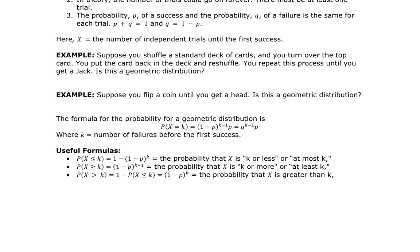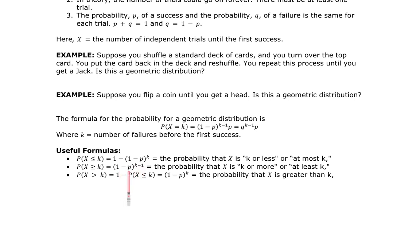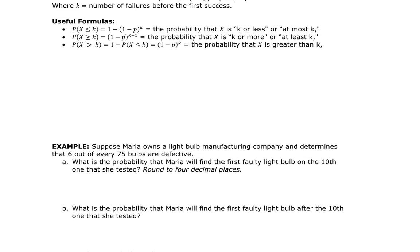Additional formulas for this section: the probability of X less than or equal to K equals one minus Q raised to the K. For X greater than or equal to K, it's one minus Q raised to the K minus one. For strictly greater than K, it's one minus P to the K, which is the probability of X greater than K.